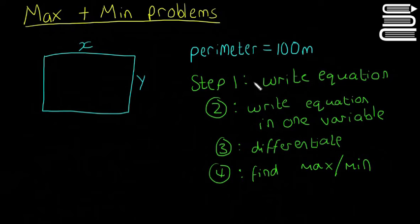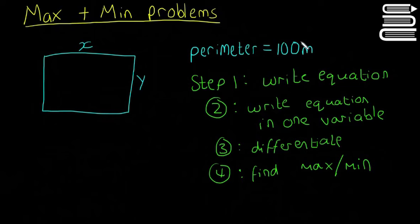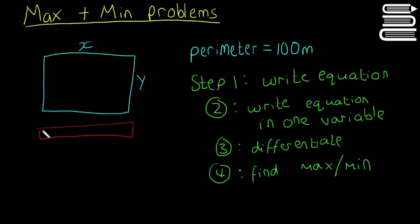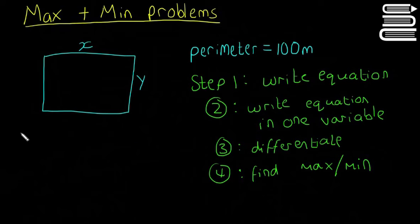The question: there's a farmer who has 100 meters of fencing and he wants to make a field. There are lots of different shapes he can make — a rectangle, a long thin rectangle, or a perfect square — and they're all going to have different areas even though they have the same perimeter.